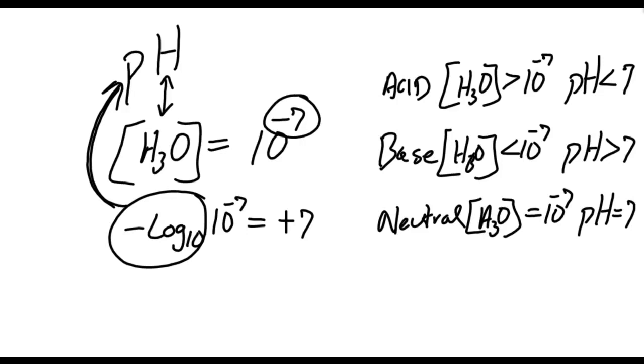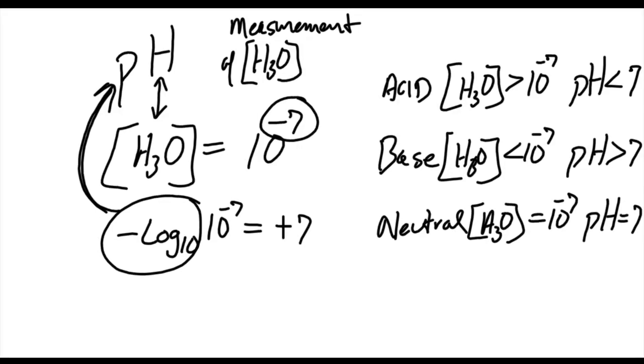So pH then is essentially a measurement. It's a measurement of hydronium ion concentration in a solution, just like we use a ruler to measure distance. We're using this pH as a measurement to measure the hydronium concentration. So now that we have a basic understanding of what pH is, how do we use this?